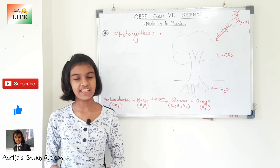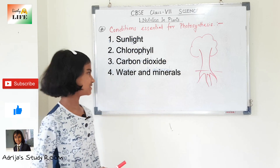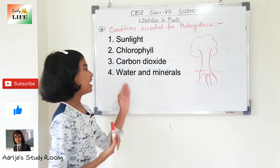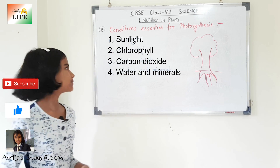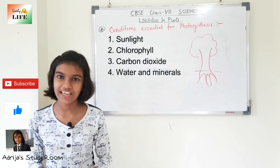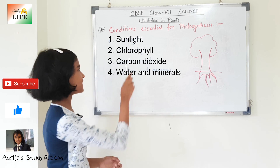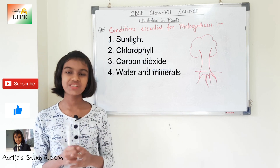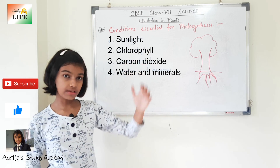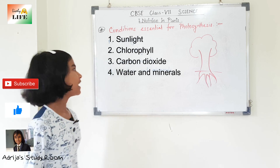Now let's discuss the conditions essential for photosynthesis. There are four conditions: sunlight, chlorophyll, carbon dioxide, and water and minerals. Sun is the main source of energy for all living organisms; in the absence of sunlight, photosynthesis cannot occur. Leaves of plants contain structures called chloroplasts, which contain chlorophyll. The chlorophyll helps in trapping sunlight, which helps in making glucose. Chlorophyll is also very vital for the process of photosynthesis.